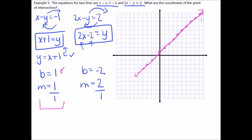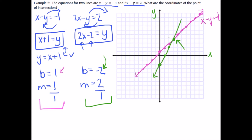Label that line x minus y equals negative one. Now the second line in green: reference point is y-intercept at negative two on the y-axis. Apply slope: up two over one, up two over one, up two over one. There already is our point of intersection. Label it 2x minus y equals two. The point of intersection is at three comma four, meaning x equals 3, y equals 4.